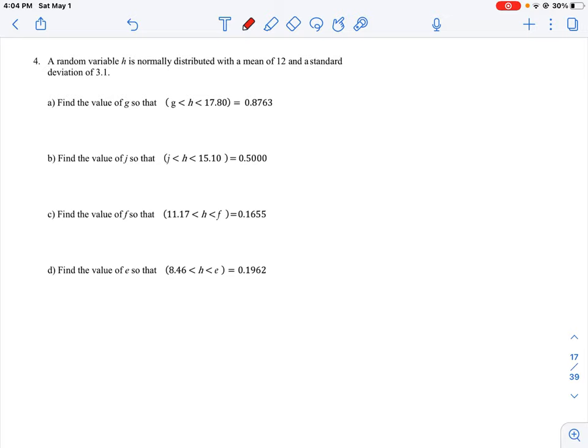So we have something here called a random variable. A random variable is just a placeholder, a value like x, to represent a set of values which are going to be normally distributed, meaning it's going to follow a standard distribution curve. So if we look at question A, the way we want to visualize this question is we've got our curve. We draw our standard distribution curve. We know the mean is 12, and we have a standard deviation of 3.1. So right away, we should mark our mean, which is 12, that's going to be our 50% point, and our standard deviation is 3.1.